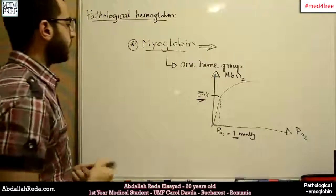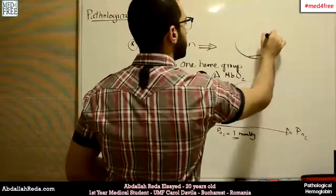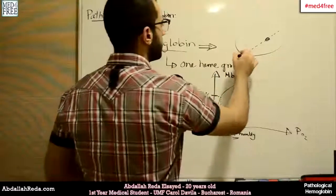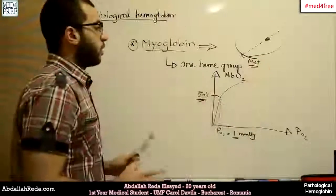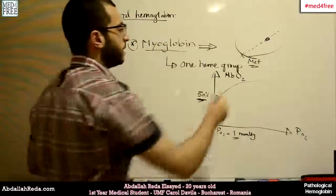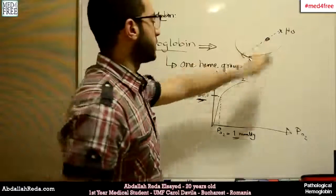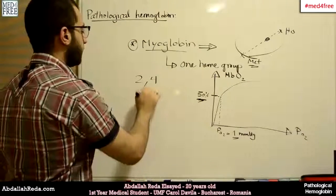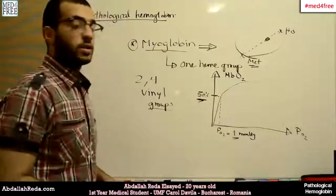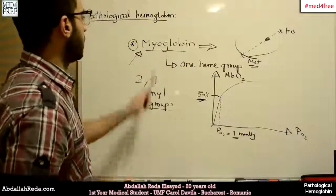The heme group in hemoglobin is bound to two histidines — one proximal and one distal. For myoglobin, the distal histidine is replaced by a methionine. So the myoglobin chain and heme group are bound through the distal methionine and the proximal histidine. Additionally, the heme group itself has vinyl groups at positions two and four, which also contribute to binding the heme group to the myoglobin chain. This very strong attachment contributes to myoglobin's high affinity for oxygen.